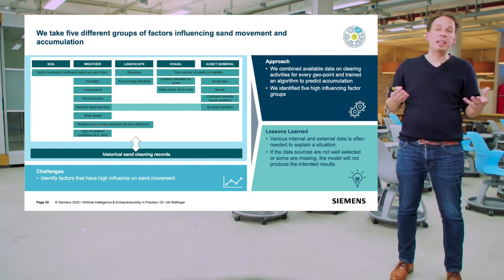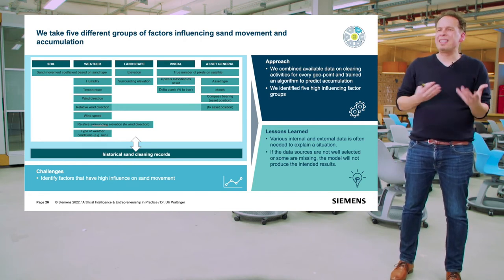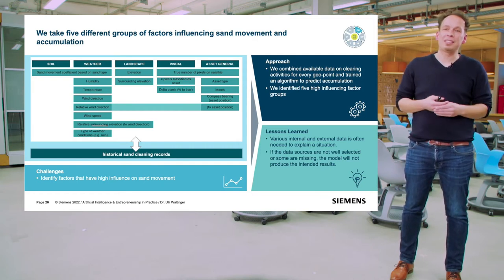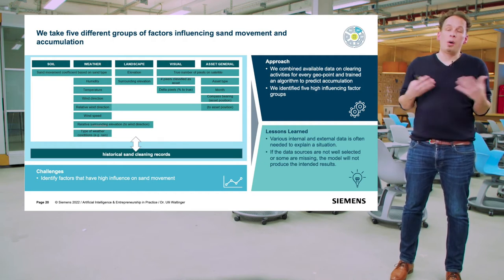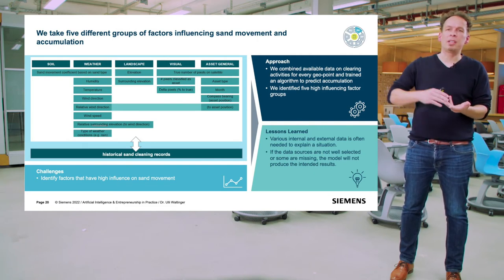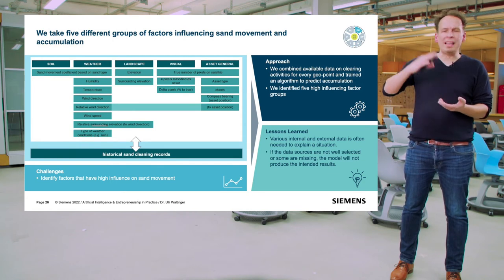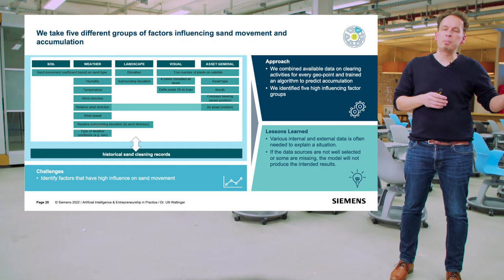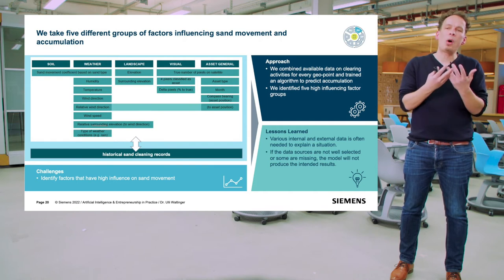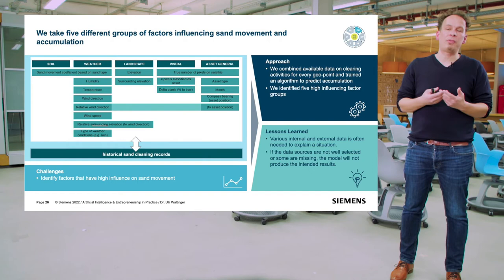Business understanding then leads to data understanding. The first question was: what kind of data is actually available? We made an index of influential factors for sand moving through the desert and accumulating at certain locations. Obviously weather is a factor — wind, storms — but also temperature, wind direction, the landscape itself, elevation, satellite images, and past experience from truck movement history. Data understanding is critical in identifying not only external data but also internal data, and trying to explain what high-influence factors can be identified for a potential solution.